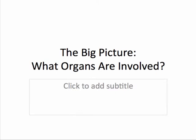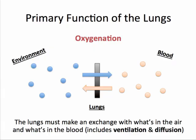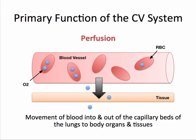Now let's take a look at the bigger picture and discuss which organs are involved in oxygenation and perfusion. Adequate oxygenation and perfusion requires adequately functioning lungs, heart, blood vessels, nervous system, and musculoskeletal system. The primary function of the lungs is oxygenation — the lungs make an exchange with what's in the air and what's in the blood, including the processes of ventilation and diffusion. The primary function of the cardiovascular system is perfusion, which involves the movement of blood into and out of capillary beds of the lungs to body organs and tissues.